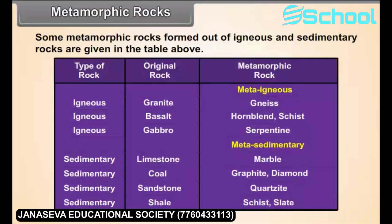Some examples of metamorphic rocks formed from igneous and sedimentary rocks include: Limestone (sedimentary) becoming Marble; Coal (sedimentary) becoming Graphite or Diamond; Sandstone (sedimentary) becoming Quartzite; and Shale (sedimentary) becoming Slate.